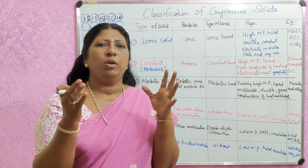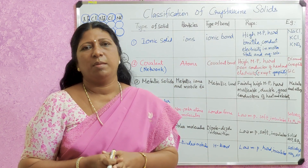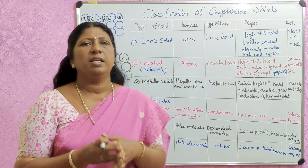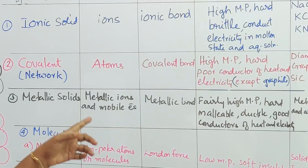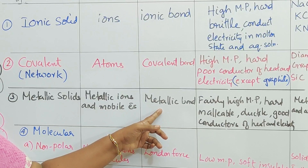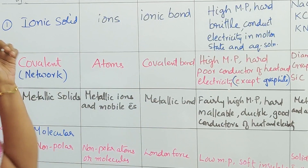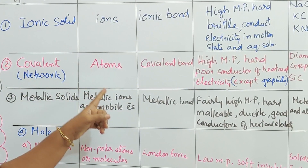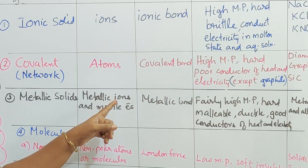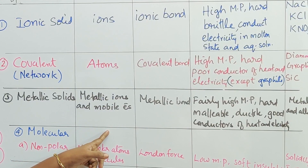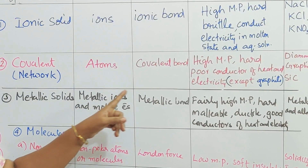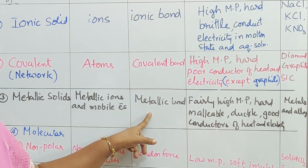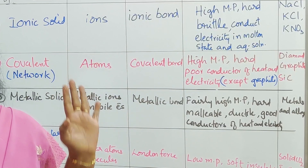That force of attraction between metallic ions and the pool of mobile electrons is called metallic bond. So in metallic solids, the constituent particles are metallic ions and mobile electrons, and the force of attraction is called metallic bond. Examples include all metals and alloys.